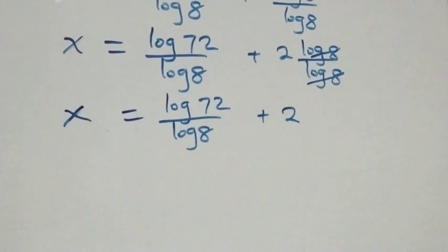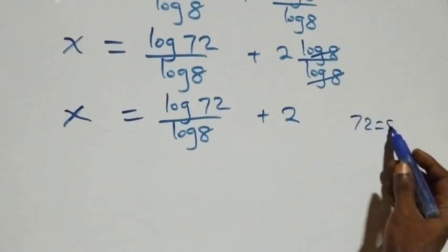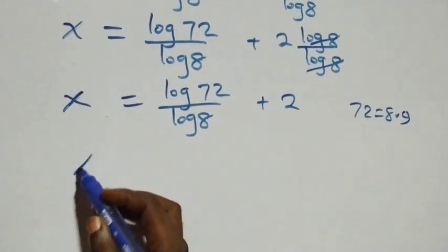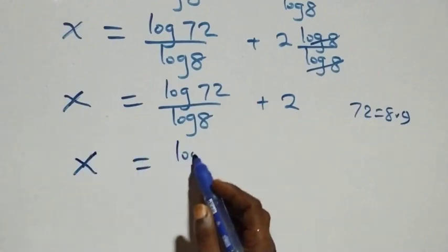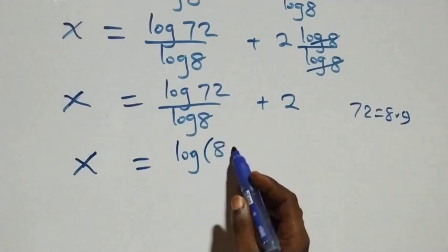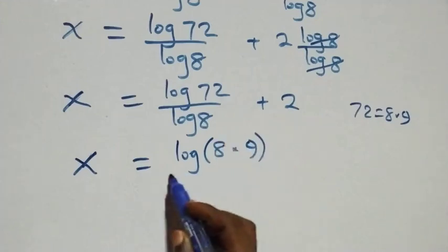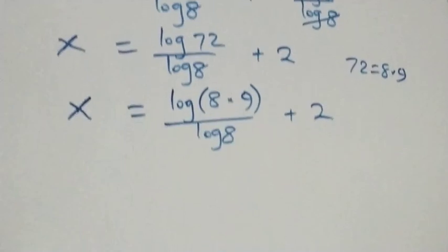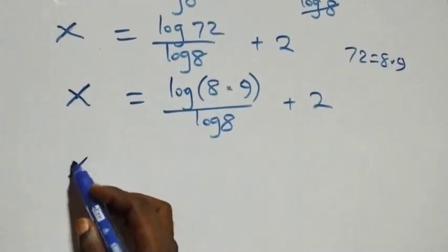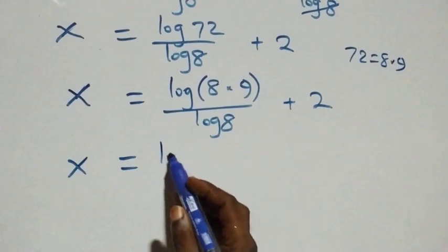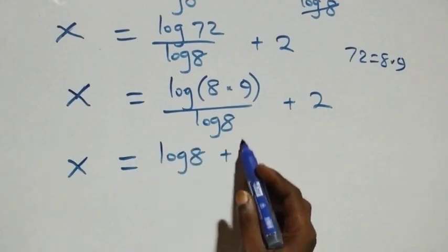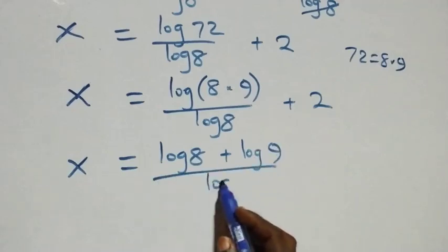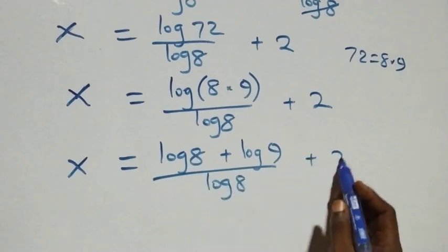We can express 72 as 8 times 9, so x equals log(8 times 9) over log 8 plus 2. Using the product rule, this becomes x equals (log 8 plus log 9) over log 8 plus 2.